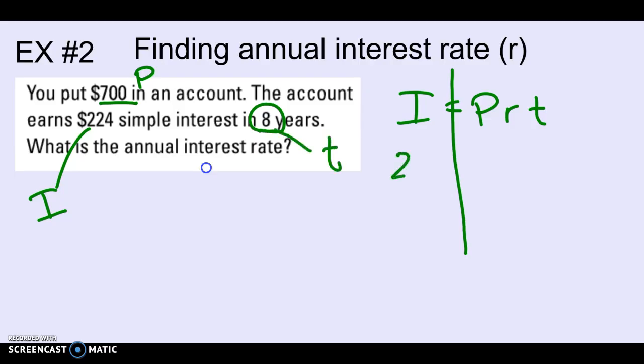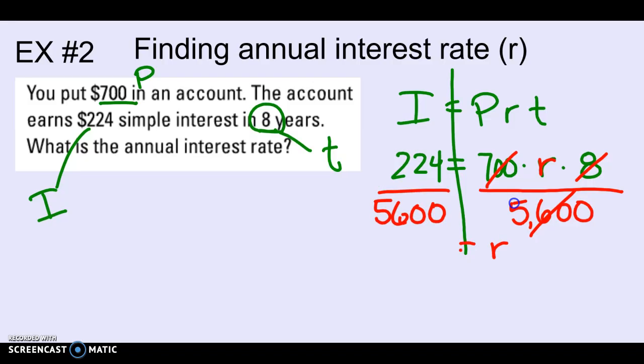So if I plug everything in where it goes, principal is $700, I don't know the rate, and it's been there for eight years. So to solve this one, I'm trying to get R by itself. So I'm going to use my calculator and multiply 8 times 700, which is 5,600. And I'm going to divide by that so that it cancels out. And whatever I do on one side, I have to do on the other side. And I get a rate of 0.04 here for my rate. And I need to turn that back into a percent. So 4% was my annual interest rate. So that's an example to find rate. Let's move on to example three.